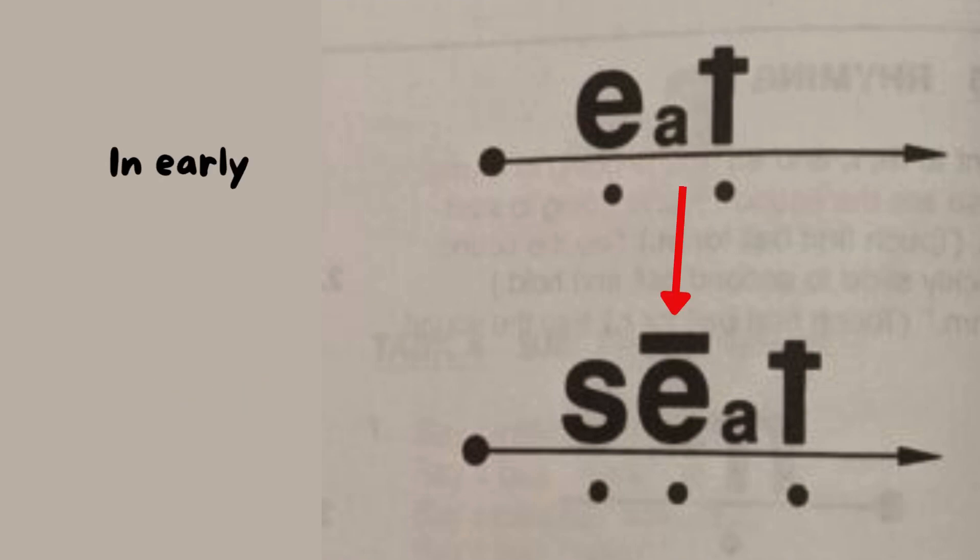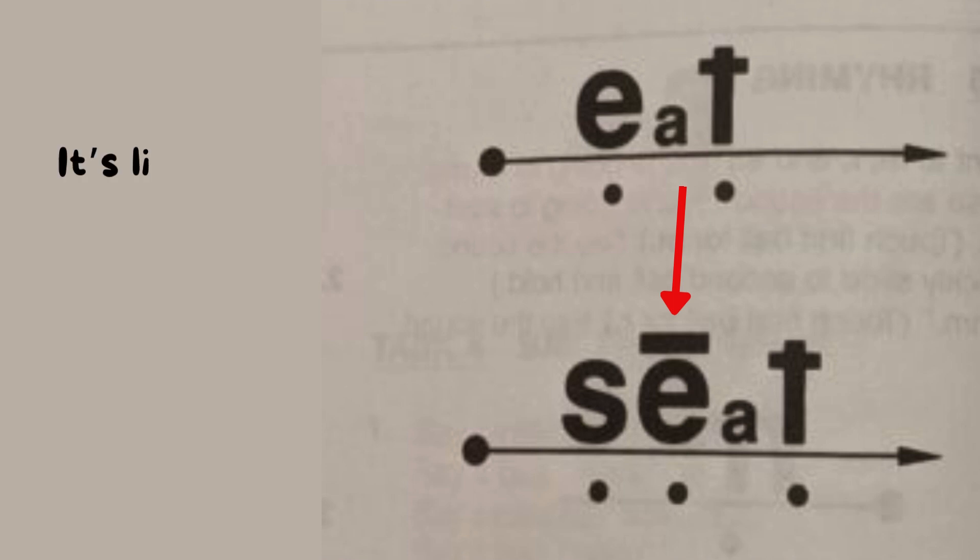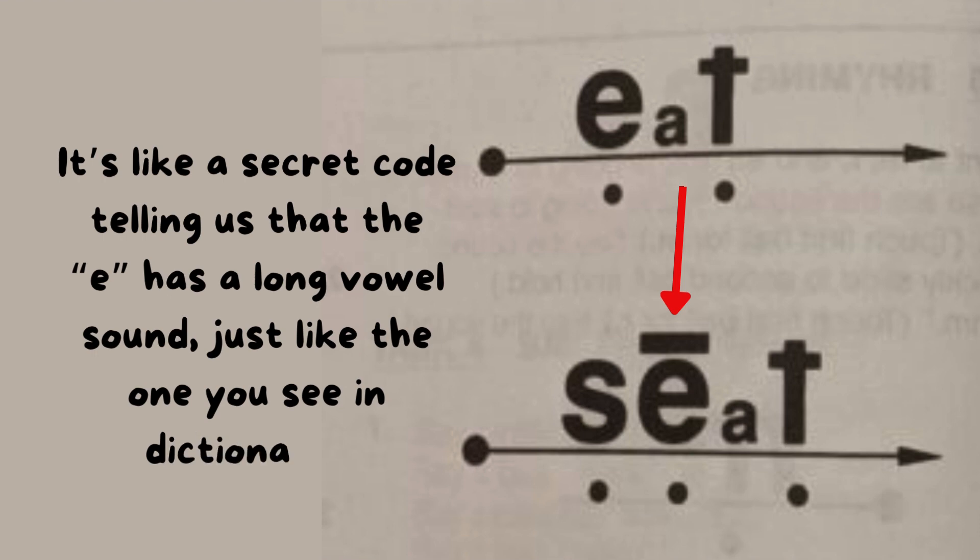In early lessons, you'll see this line above the letter E. That's called a macron. It's like a secret code telling us that the E has a long vowel sound, just like the one you see in dictionaries.